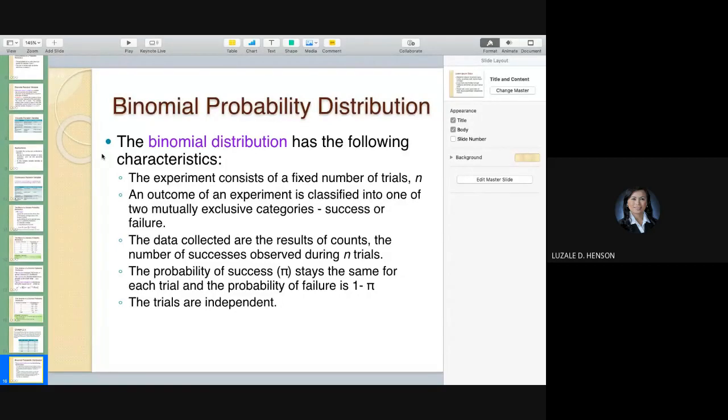One of the commonly used probability distributions is the binomial distribution. It has the following characteristics: the experiment or event consists of a fixed number of trials.